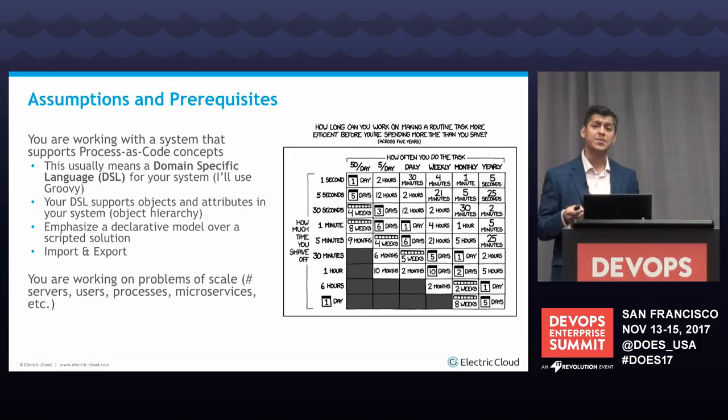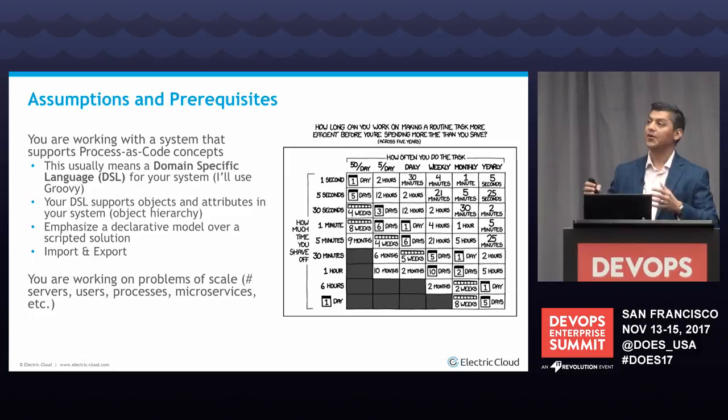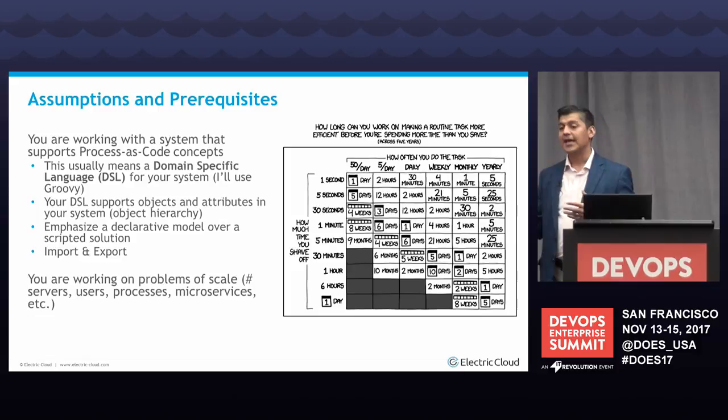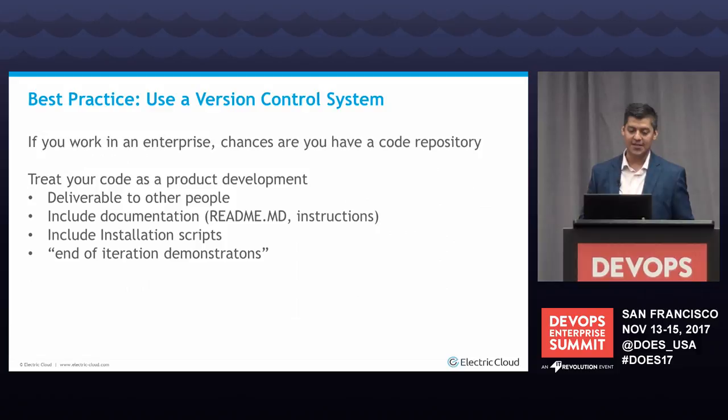Import and export: some systems will only allow you to export. If your system can allow you to both import and export, you're going to be in the right spot. Ultimately, you have to be working on problems of scale — a lot of servers, users, processes, environments, whatever. It's a big number. That XKCD chart, which most of you probably know, is relevant: you don't want to automate something that you only do once. You have to do it more than once and use the chart as you think is needed.